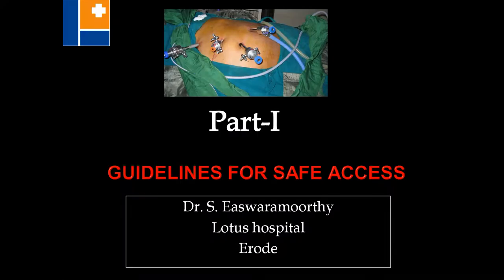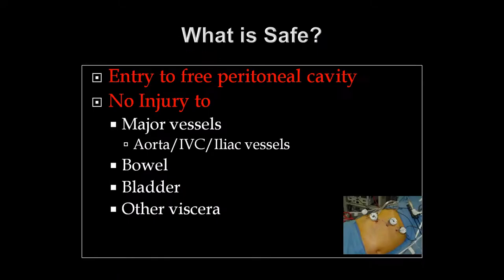Dear friends, ladies and gentlemen, in this next video lecture, we are going to see safe peritoneal access and access-related injuries in two parts. Safe peritoneal access is entry to the free peritoneal cavity with no injury to major vessels, namely aorta, IVC or iliac vessels, and no bowel or bladder injury or injury to other viscera.